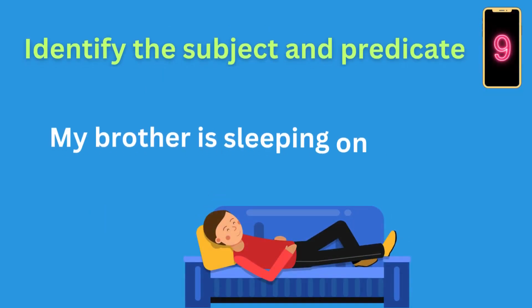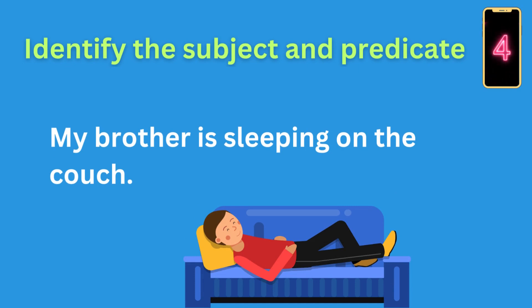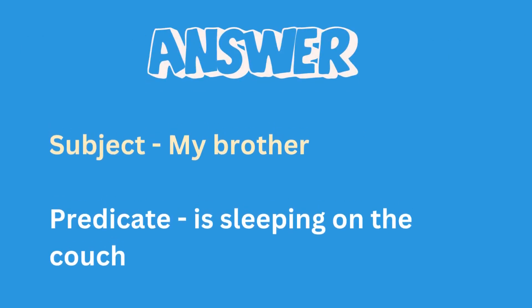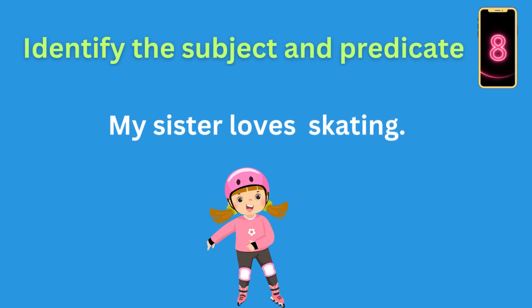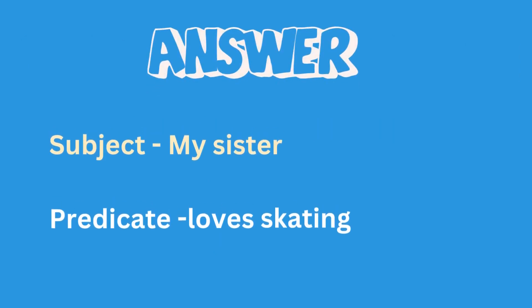Let's try another sentence: my brother is sleeping on the couch. The subject of this sentence is my brother, and the predicate is sleeping on the couch. Last one: my sister loves skating. The subject of this sentence is my sister, and the predicate is loves skating.